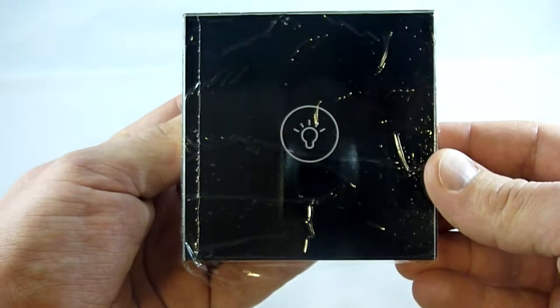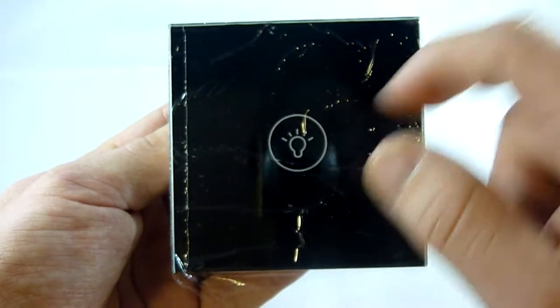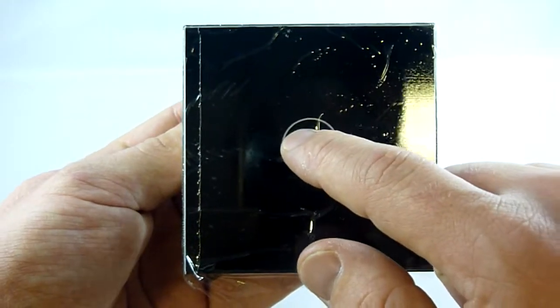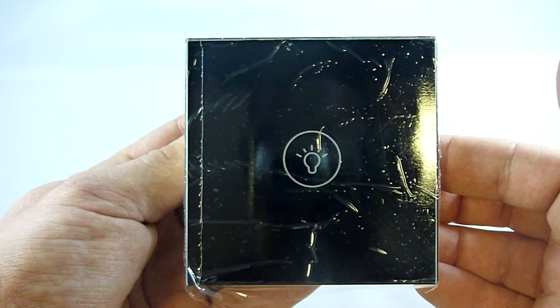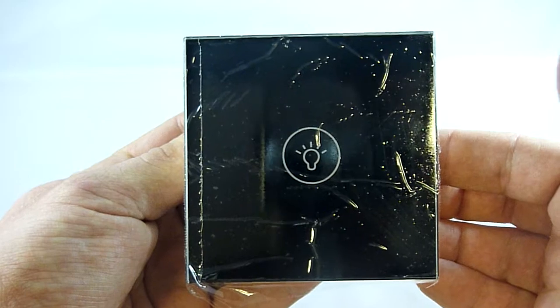When installed, obviously the electric's wired in, the central piece there will illuminate blue. Just touch it on and off, simply like that. If you have any other questions, feel free to call us on 0800 043 5532.